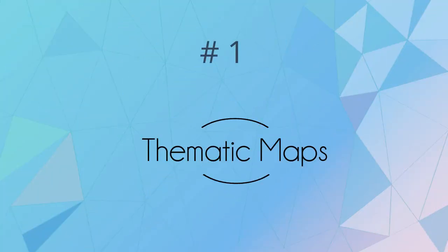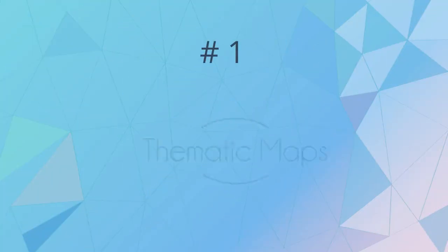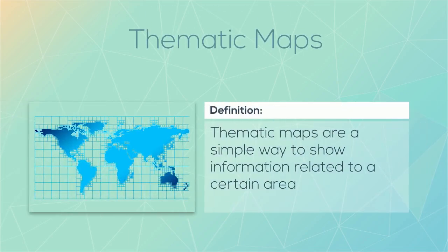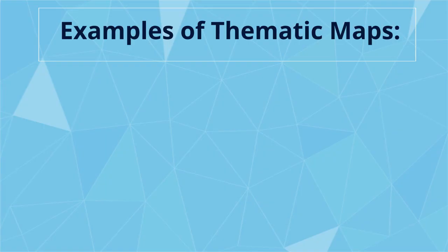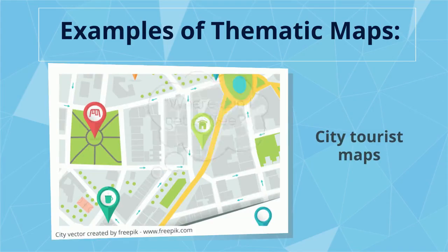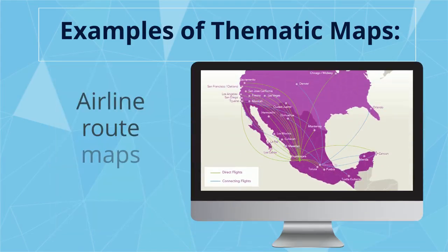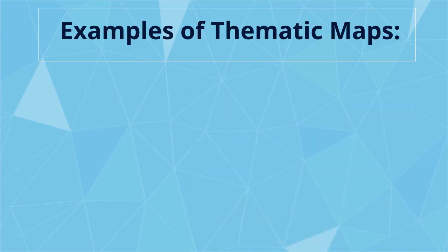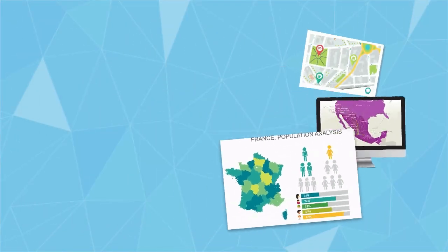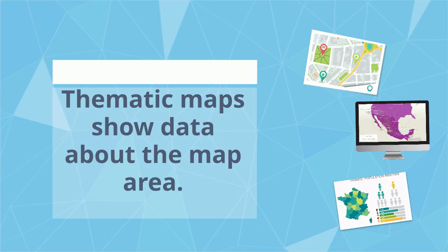Thematic maps are a simple way to show information related to a certain area. Examples of thematic maps include city tourist maps, airline route maps, and population maps. Remember, thematic maps show data about the map area.